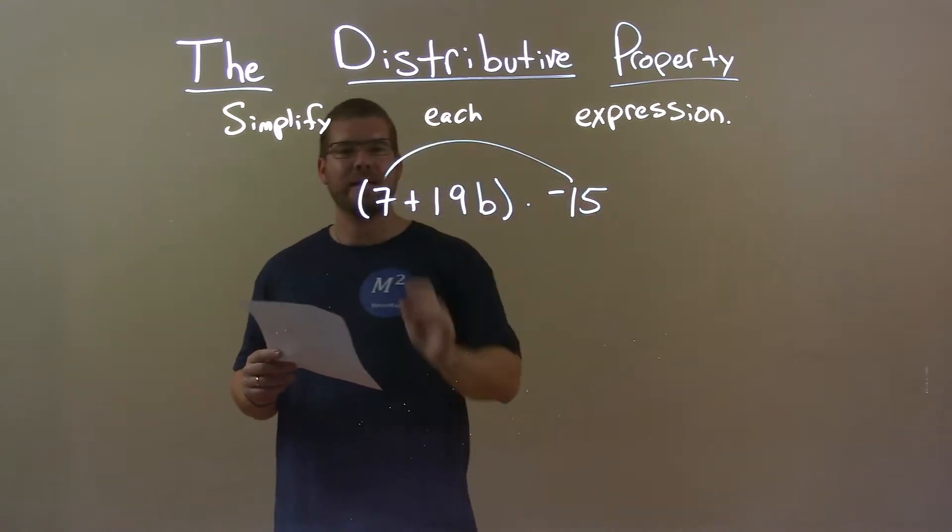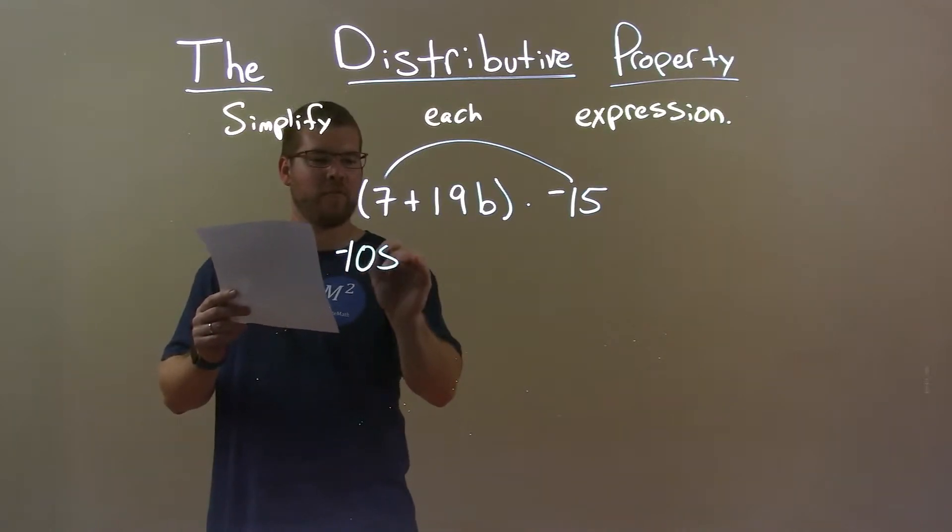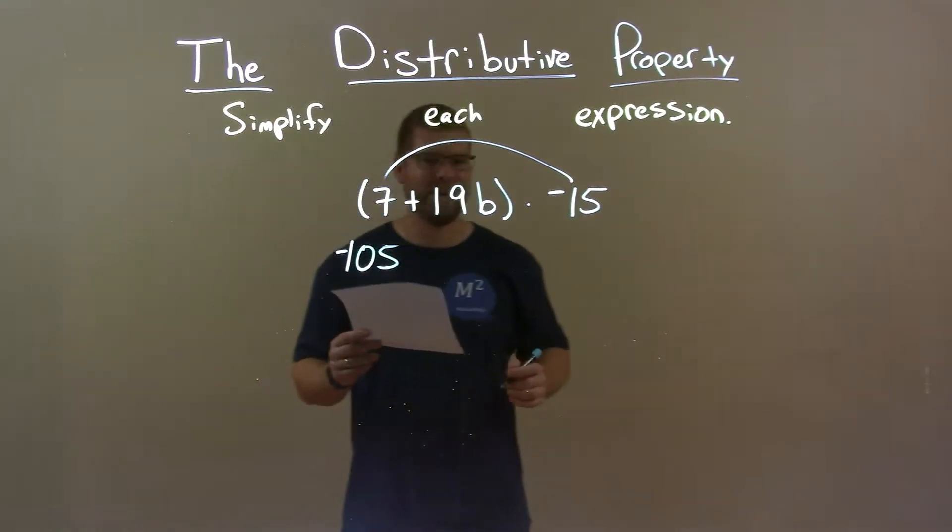Negative 15 times 7, well I don't know off the top of my head, but I got it here for you, is negative 105. Take my word for it.